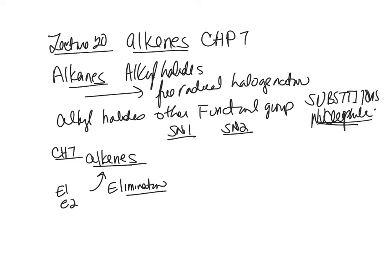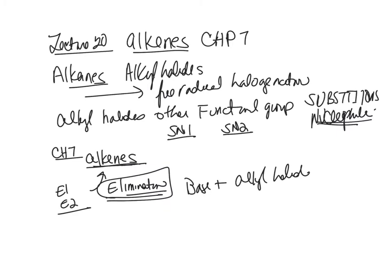E1 means unimolecular for the rate of reaction, and E2 is bimolecular — the rate of reaction is based on your base plus your alkyl halide. We're still using alkyl halides and alcohols, and they're going to go through an elimination reaction to make an alkene. In this lecture 20 video, we'll start with alkene nomenclature, talk about thermodynamic stability, introduce elements of unsaturation, and then go into the Pogel exercises for 10A and 10B.